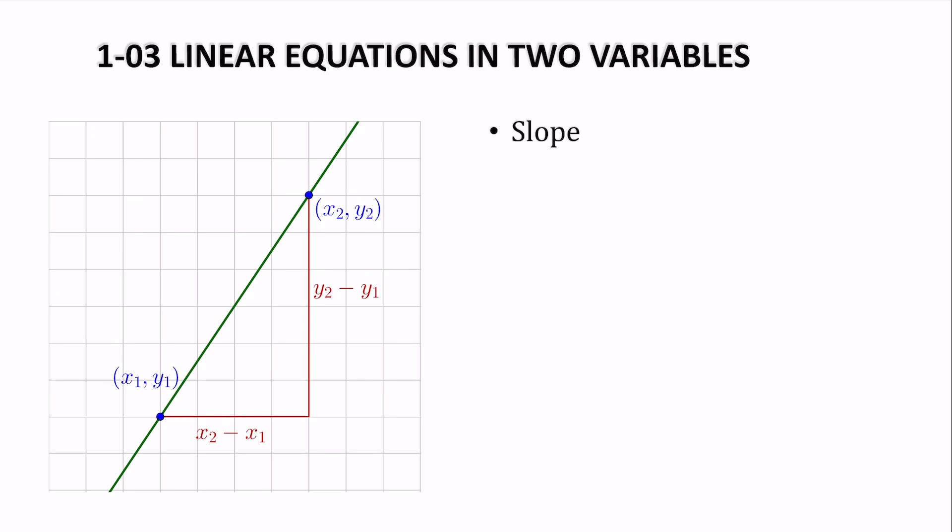So let's look at slope a little more. Like I said, slope is rise over run. So if I have my two points here, the rise is just the change in the y values, and the run is the change in the x values.